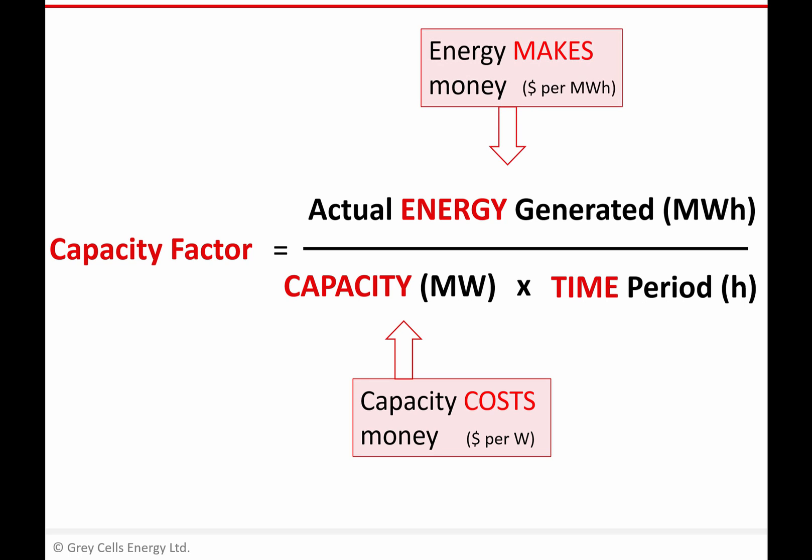On the top line, of course, it's generating energy that makes us money. We sell units of energy in dollars per megawatt hour. So on the top line of the equation, we've got energy which is making us money. On the bottom line, we've got capacity which is costing us money. From an economic point of view, the importance of capacity factor is that it's a ratio between something that's making us money and something that's costing us money.